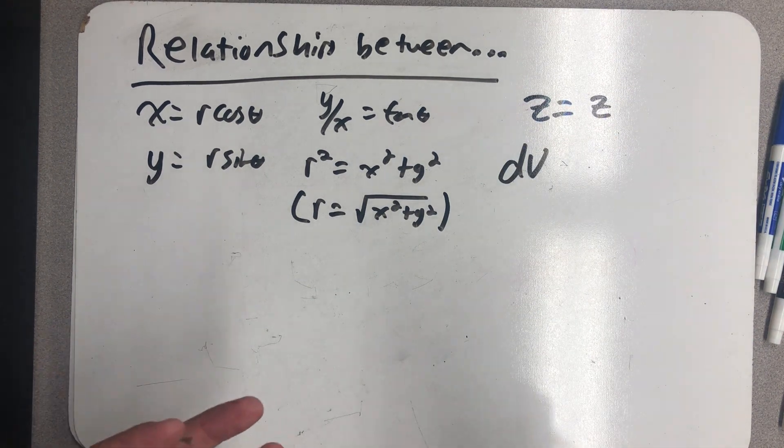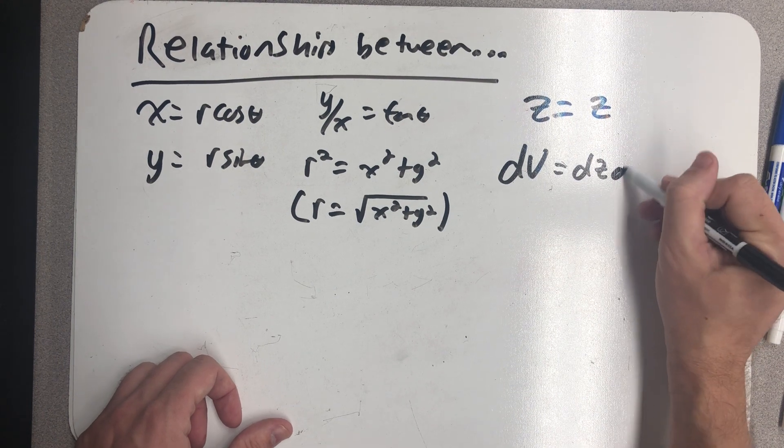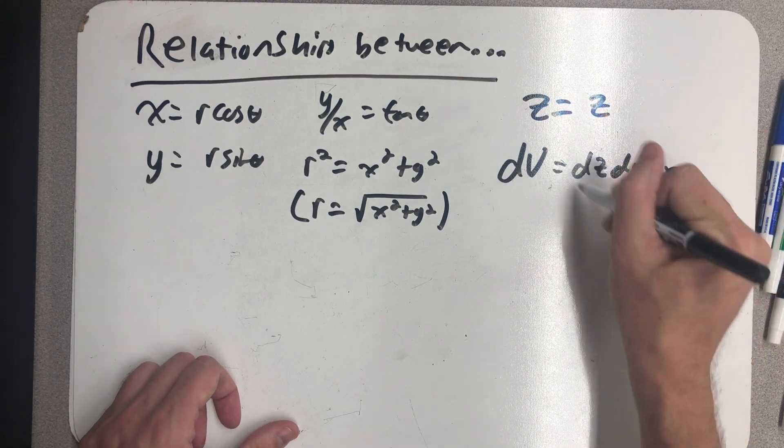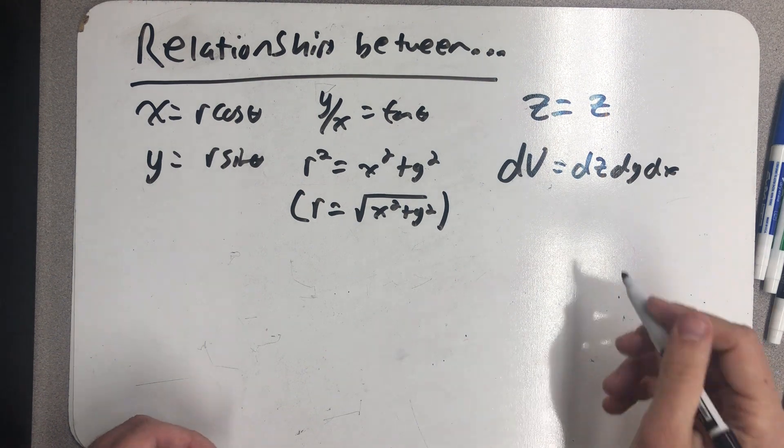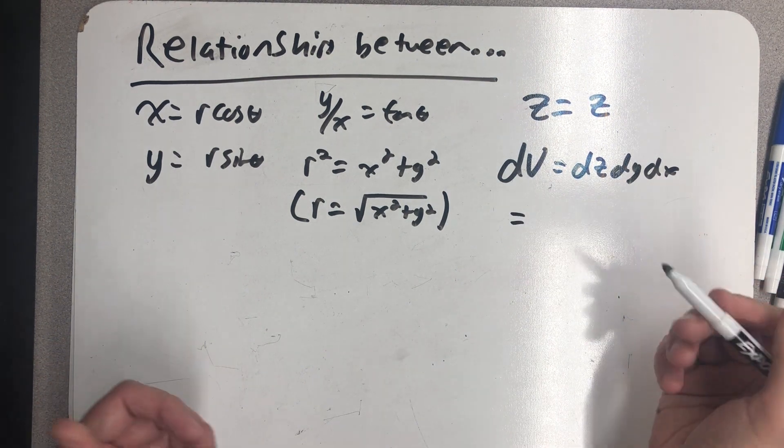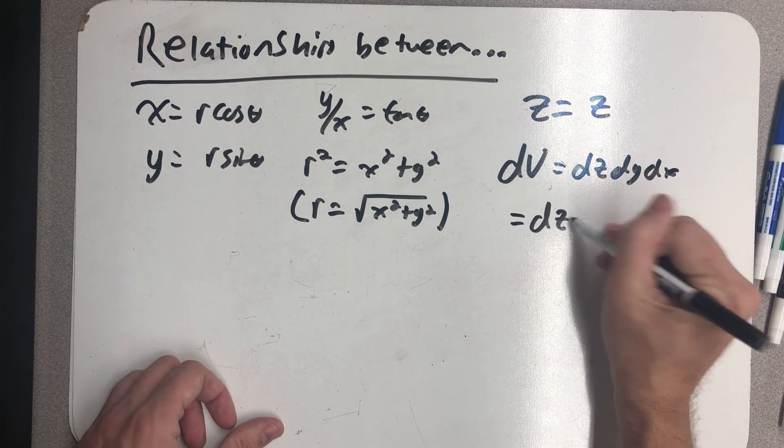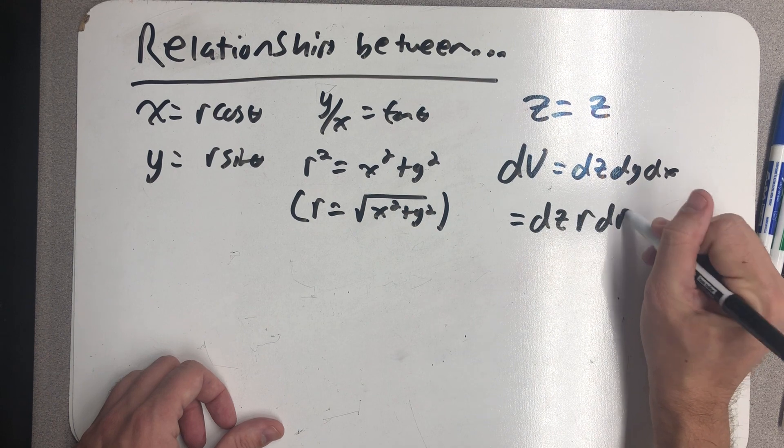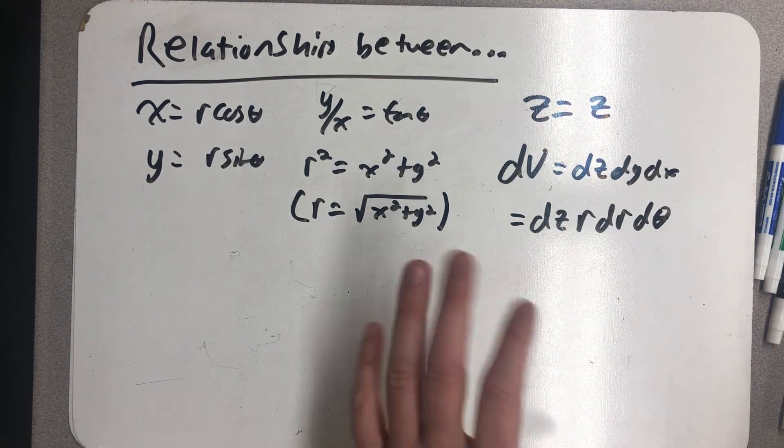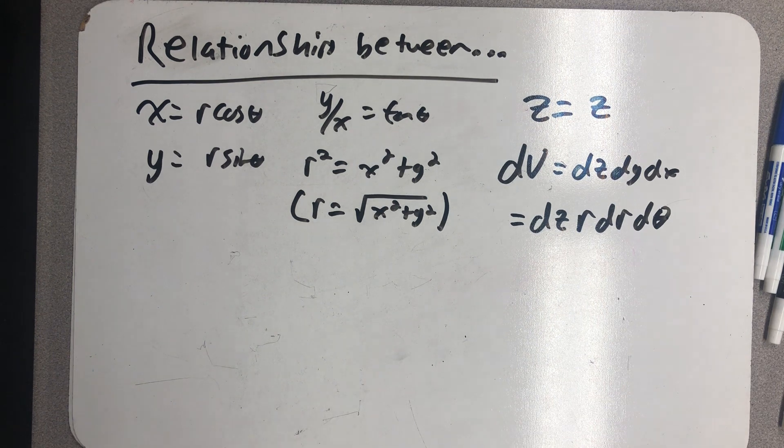And finally, if I was thinking about dV in rectangular coordinates, it would be dz·dy·dx in whatever order we thought was convenient. And in cylindrical coordinates, that's dz·r·dr·dθ. And there again, we might be able to change the order of that to make some integration easier.